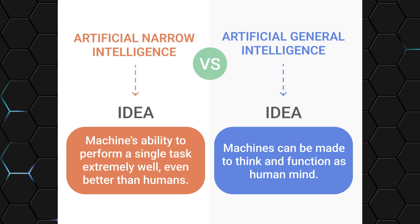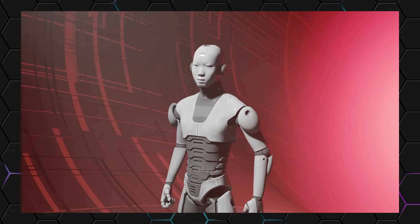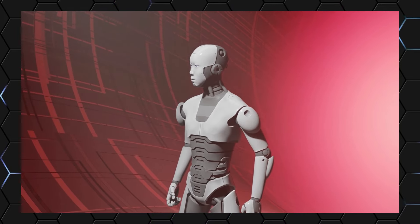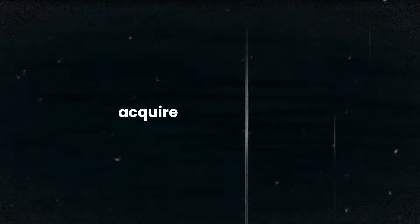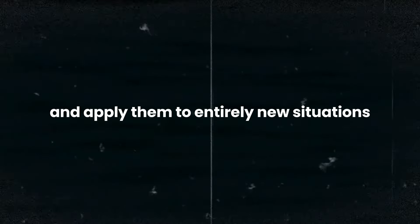AGI refers to a machine that can understand, learn and apply its knowledge to any intellectual task a human can. In essence, AGI would possess the ability to think, reason and adapt in a way that is indistinguishable from a human mind.